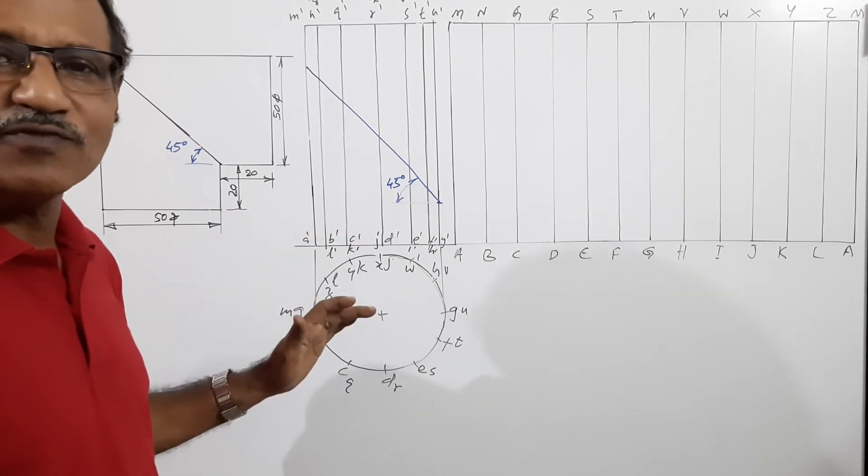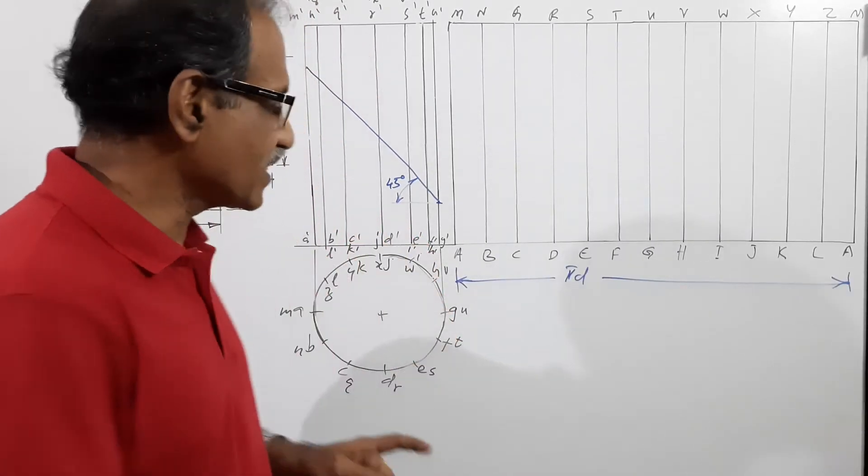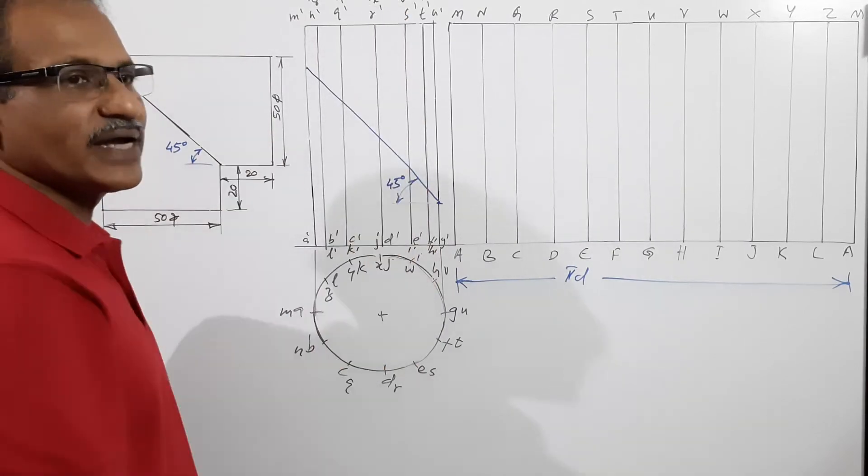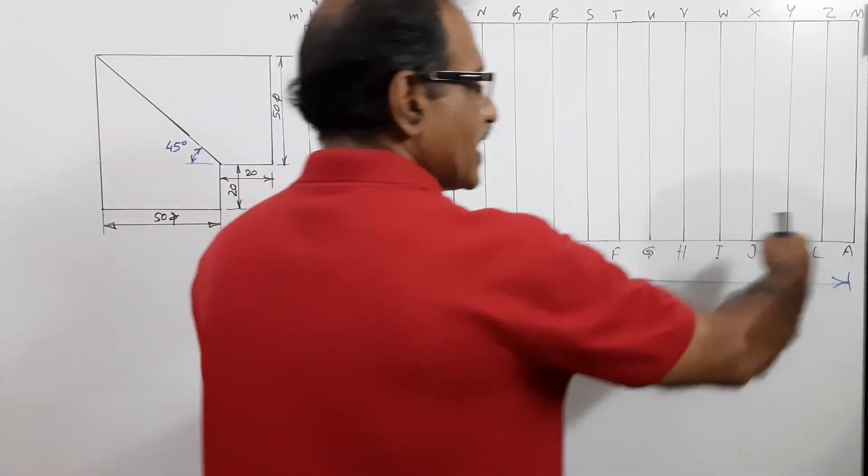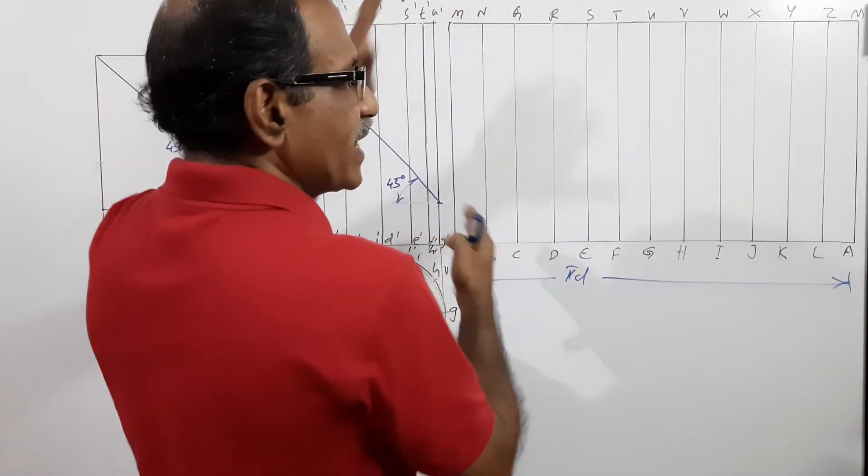You know the development of a cylinder? When you draw the development of a cylinder, that is 50 mm diameter, 90 mm height, you know you get a rectangle of length pi d, 90 mm height, a rectangle.